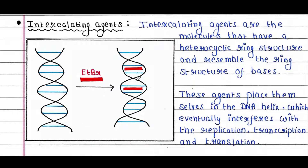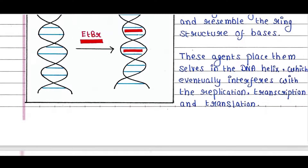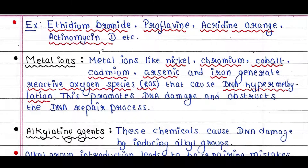Intercalating agents are molecules that have a heterocyclic ring structure and resemble the ring structure of bases. These agents place themselves in the DNA helix, which eventually interferes with replication, transcription, and translation. For example, ethidium bromide gets placed in between two base pairs. Other examples include proflavin, acridine orange, and actinomycin D.